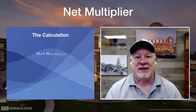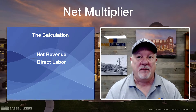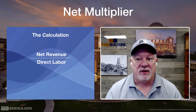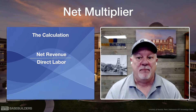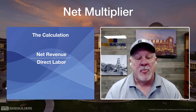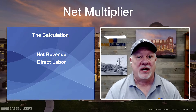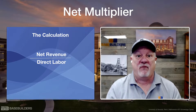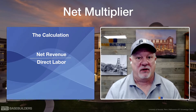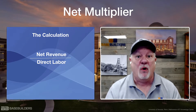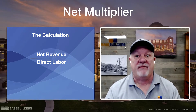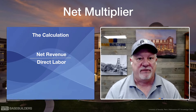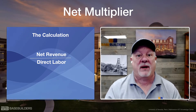Let's look at what the calculation is to get to your Net Multiplier. Number one, you're going to take your Net Revenue, then you're going to divide it by your Direct Labor. Which means you can do this on a project-by-project basis, or you can do it for what happened during the month or what happened during the year for your firm overall. Look at what your Net Revenues are and divide your Direct Labor in. This is really powerful when you apply it on a project-by-project basis.